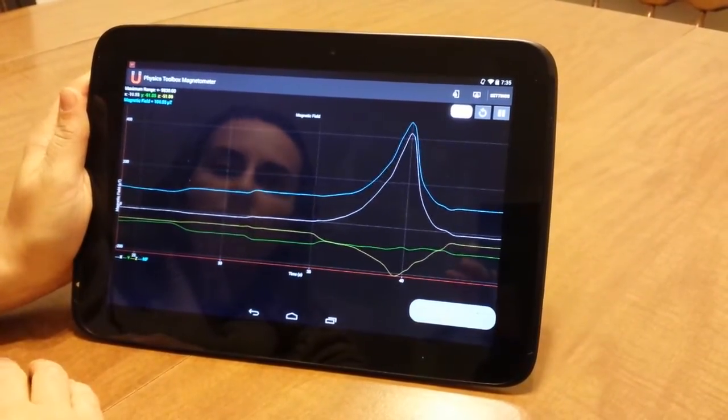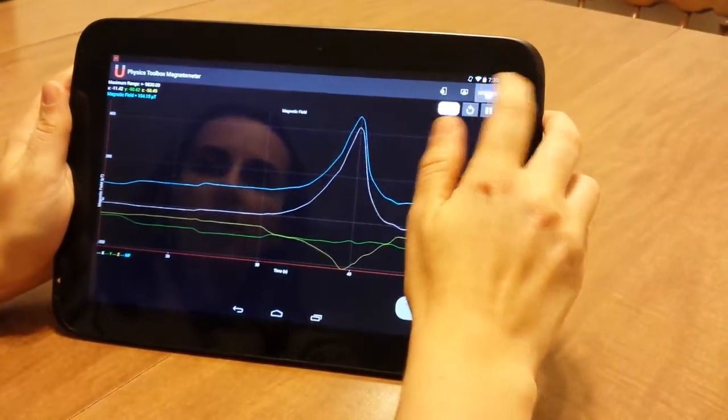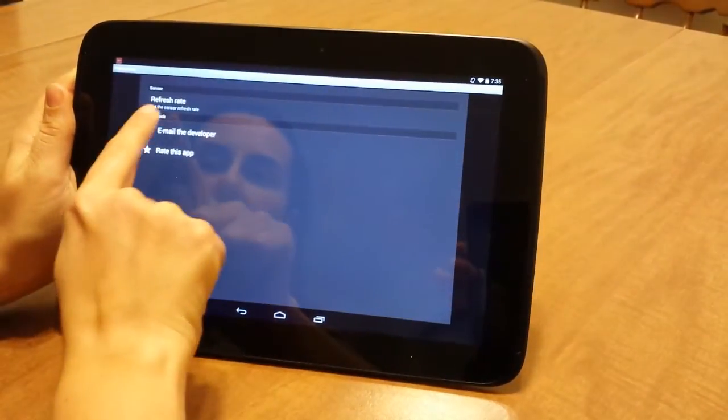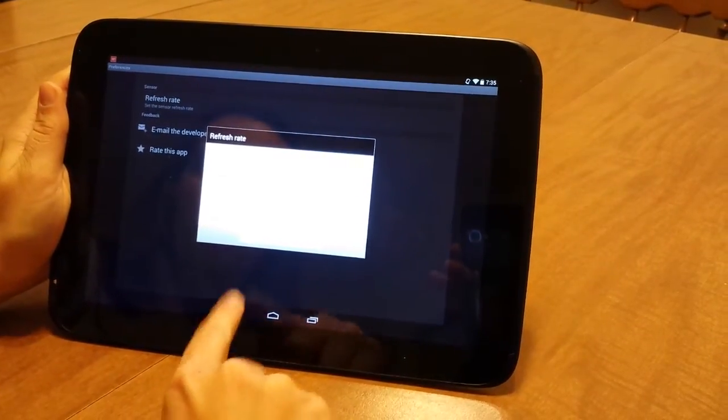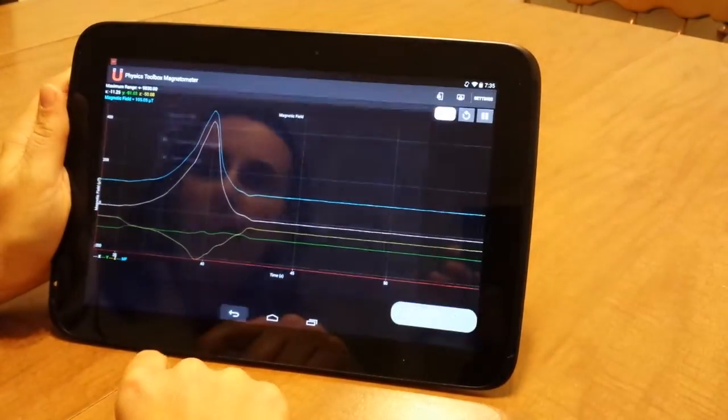Now depending upon what I'm looking for, I can change my settings so that I can change my refresh rate so that it's slow or really fast depending upon what kind of precision that I might be looking for.